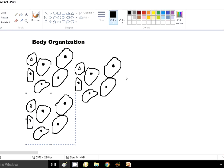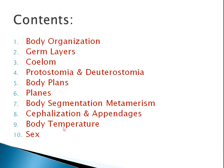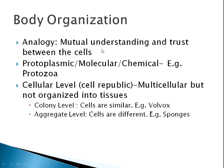Our body is composed of many organ systems — that's how it evolved. Now let's look at the PowerPoint again. I talked about the analogy of mutual understanding and trust between cells — that's what forms different levels of body organization. First, the protoplasmic or molecular/chemical level — that is Protozoa, with only a single cell and interaction between organelles. Then the cellular level of organization, where the whole cell is devoted to perform a particular job. That is of two types: the colony level, where cells are similar, as in Volvox, and the aggregate level, where cells are different and starting to differentiate, as in sponges.